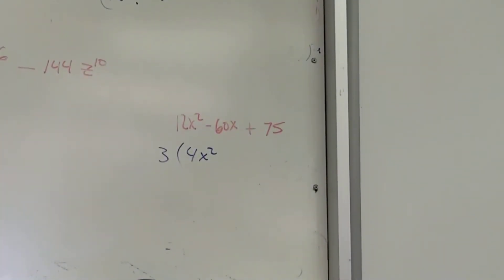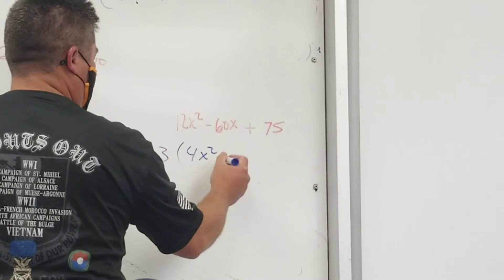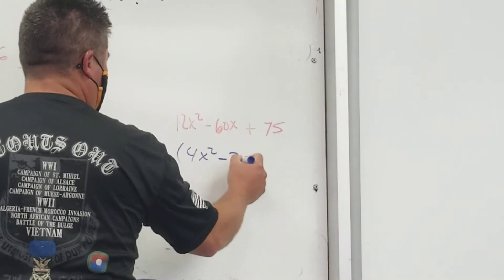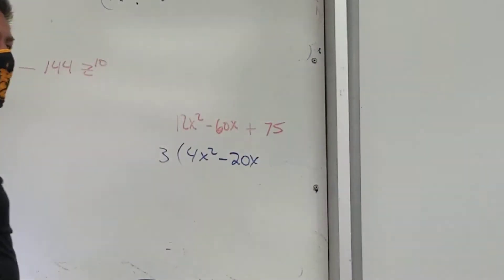Carter, what's the next one? 20. Negative, right? Negative 20. Negative 20x. And Maddie? 25.